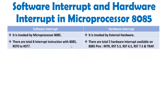For software interrupt, microprocessor 8085 has a total of 8 interrupt instructions: RST0 to RST7. For hardware interrupt, there are 5 pins available with the 8085: INTR, RST5.5, RST6.5, RST7.5, and TRAP.